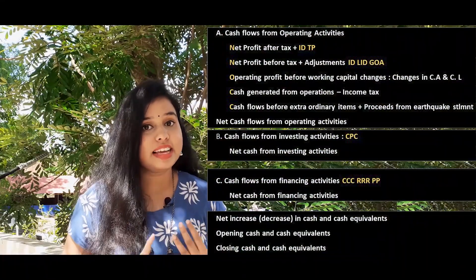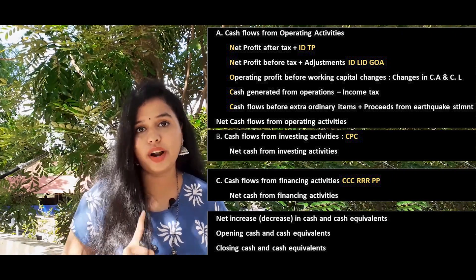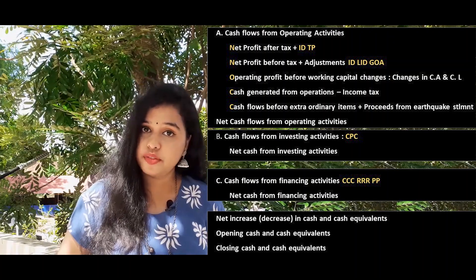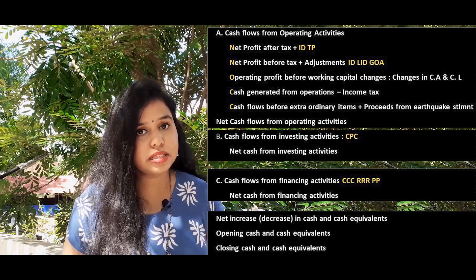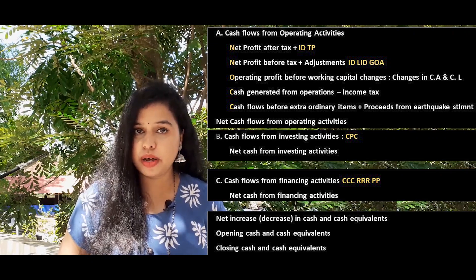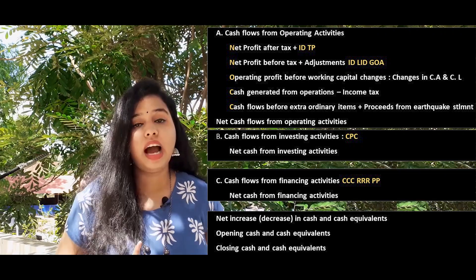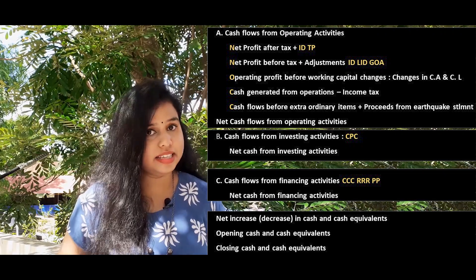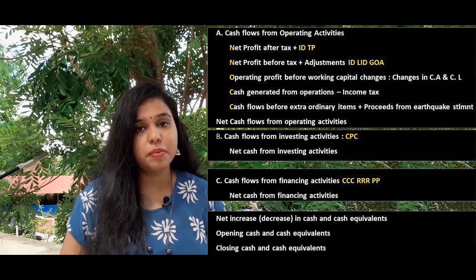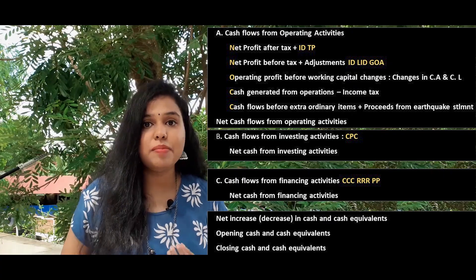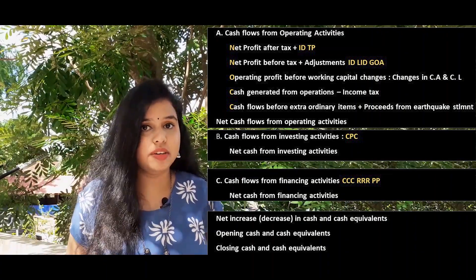To conclude: this format covers cash flow from operating, investing, and financing activities. For operating activities, we use the code NOCC: start with net profit after tax, add IDTP to get net profit before tax, apply adjustments ID LID GOA to get operating profit/loss before working capital changes, adjust for current assets and liabilities, get cash generated from operations, minus income tax, get cash flow before extraordinary items, add proceeds from earthquake/disaster settlement, and arrive at cash flows from operating activities.